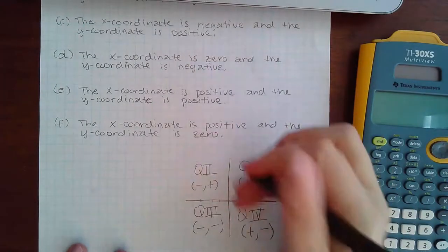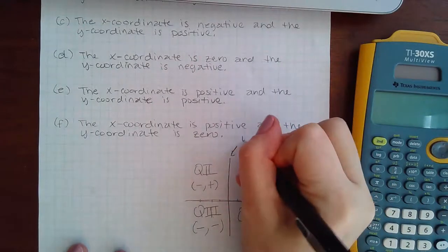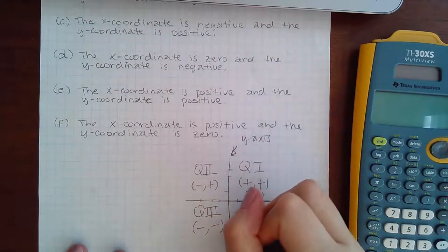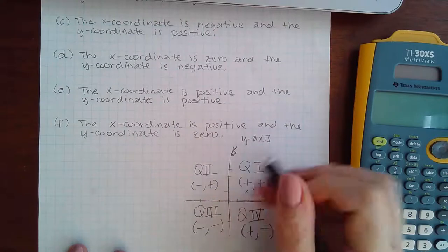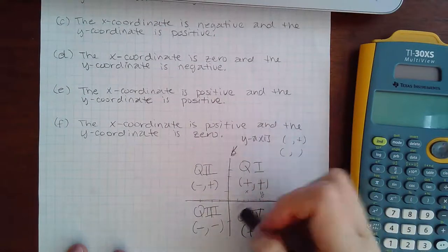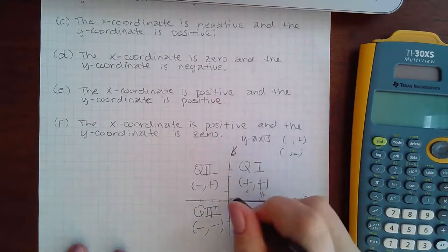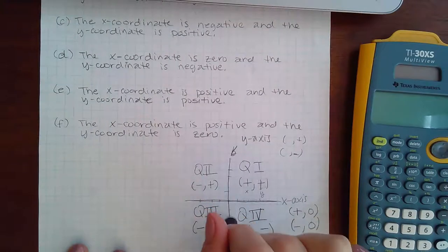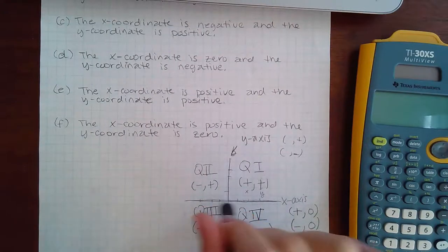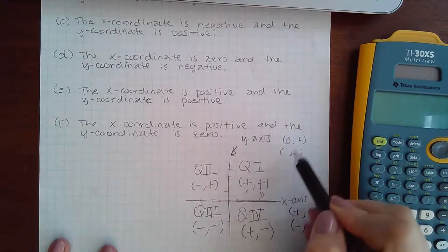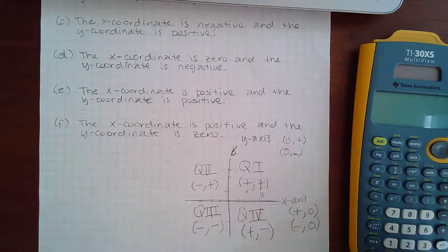Now here, you have the y-axis. In the y-axis, no matter where you are, if you go up, the y-coordinate will be positive, and if you go down, the y-coordinate will be negative. But no matter where you are, whether you're up here or down here, you're still not moving left or right. So the x-coordinate will be zero, and zero prevents you from moving left or right.